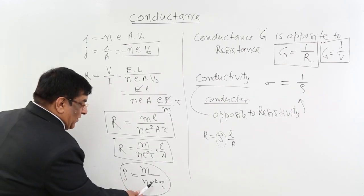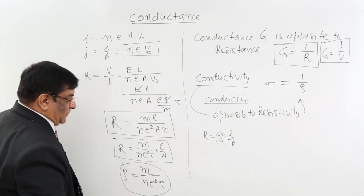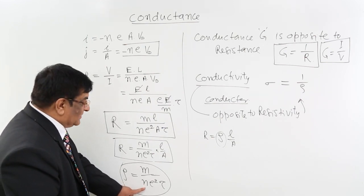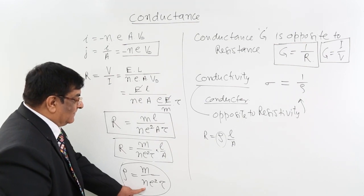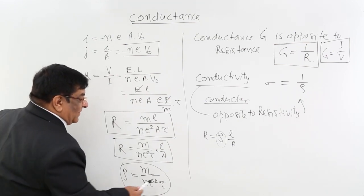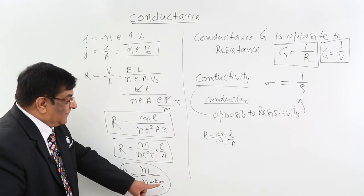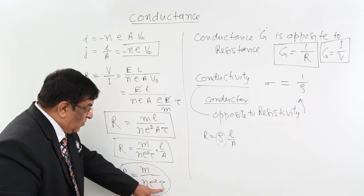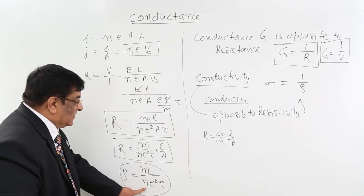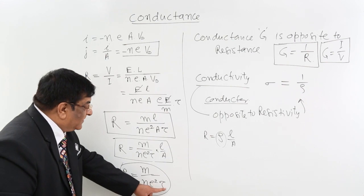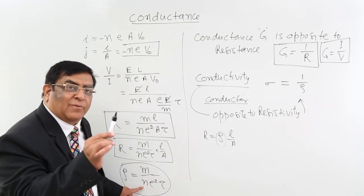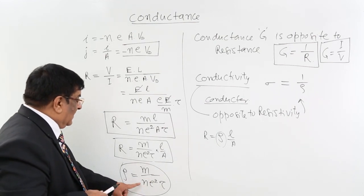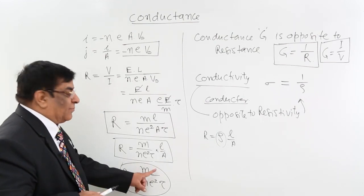Resistivity is a constant for a material. N — the number of electrons per unit volume — changes from material to material. Tau remains constant at a given temperature but differs at different temperatures. Since these two quantities are characteristics of the material, resistivity is a property of the material.